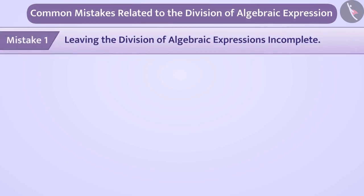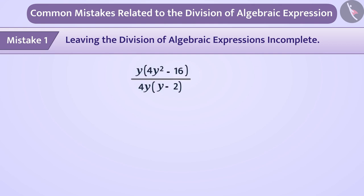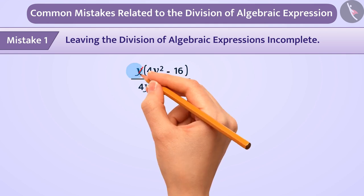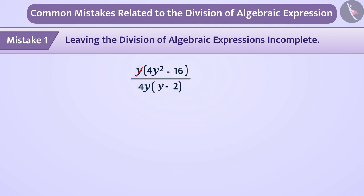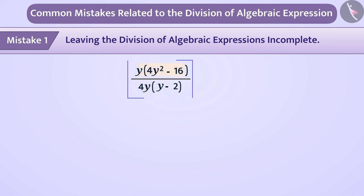Mistake one: leaving the division of algebraic expressions incomplete. Some children leave the division incomplete. For example, if given a question and asked to simplify it, some children cancel Y from the numerator and denominator by the method of cancellation, but after this they think the numerator cannot be divided by the denominator, so they leave it incomplete.